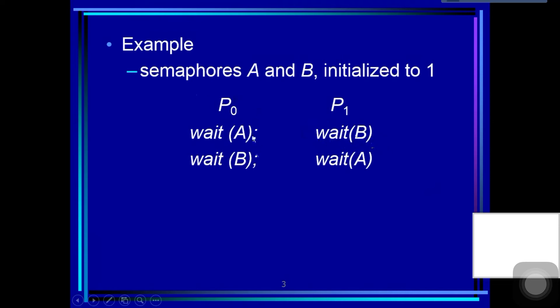Then process P0 executes wait(B). But now resource B is already held by P1, so process P0 is put into the waiting queue for resource B.